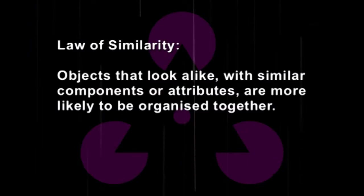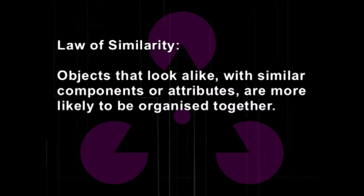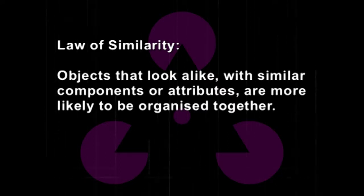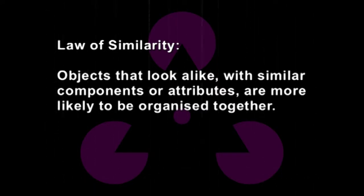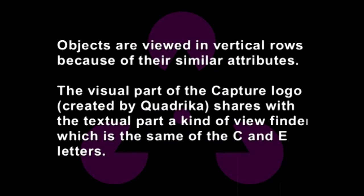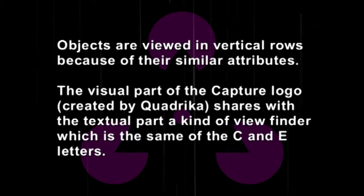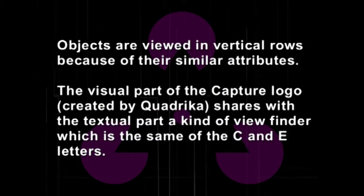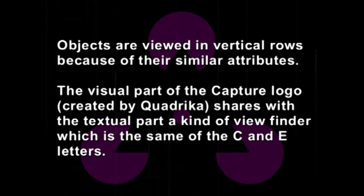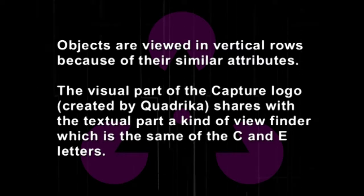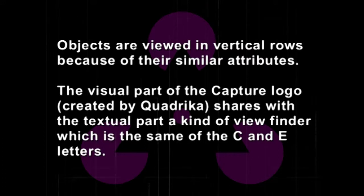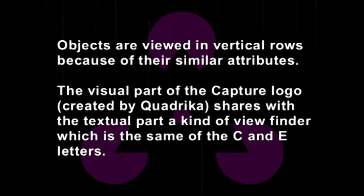The second law of perceptual organization is the law of similarity. Objects that look alike, with similar components or attributes, are more likely to be organized together. Objects are viewed in vertical rows because of their similar attributes. The visual part of the Captured logo shares with the textual part a kind of viewfinder shape, which is the same as the capital English letters C and E.